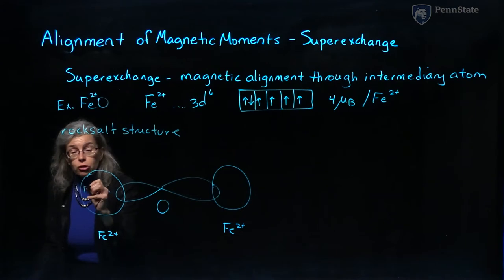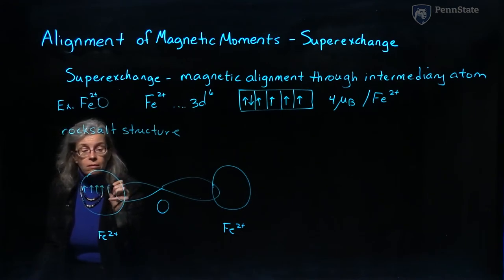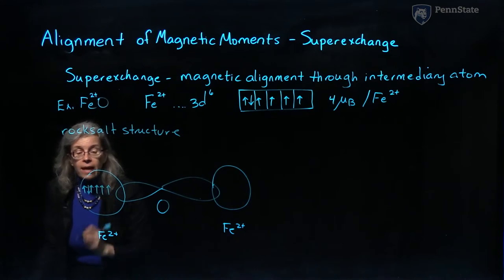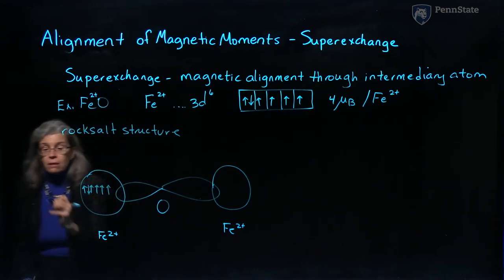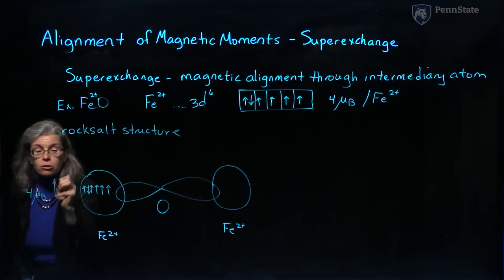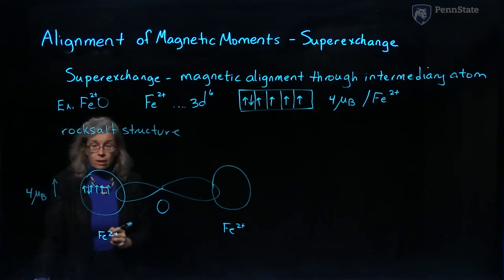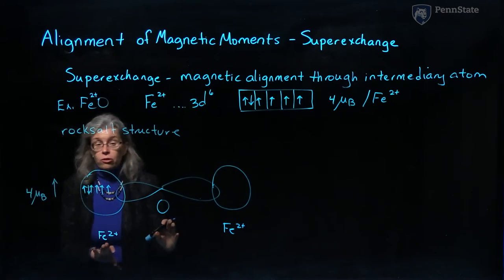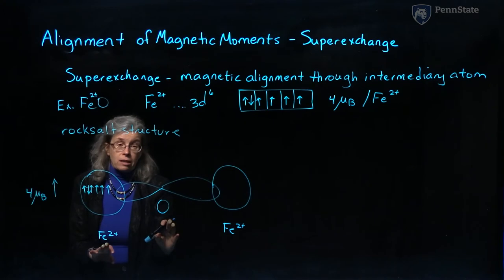So I will start and I will choose arbitrarily that that atom has a net spin of four Bohr magnetons in the up direction. The key points to recognize is that the oxygen-iron bond is largely ionic, but there is some degree of covalency.